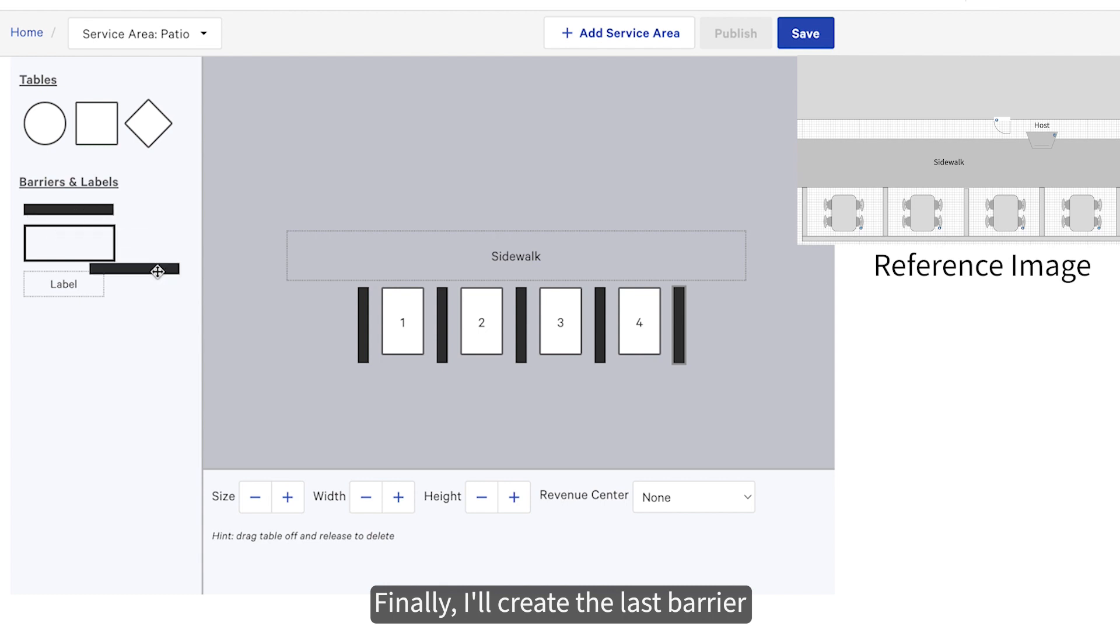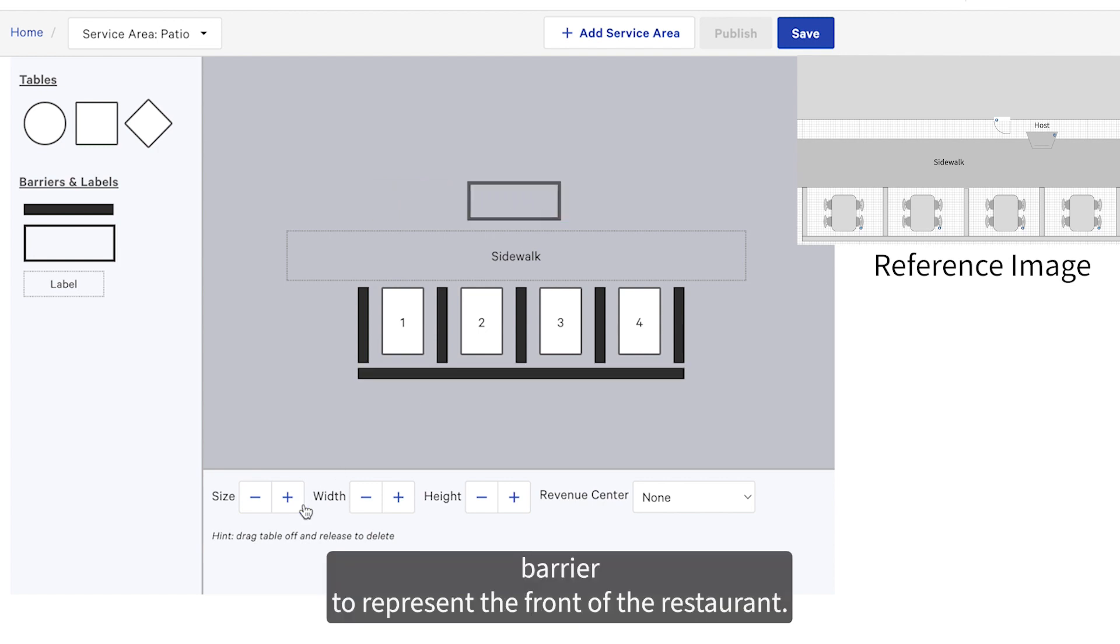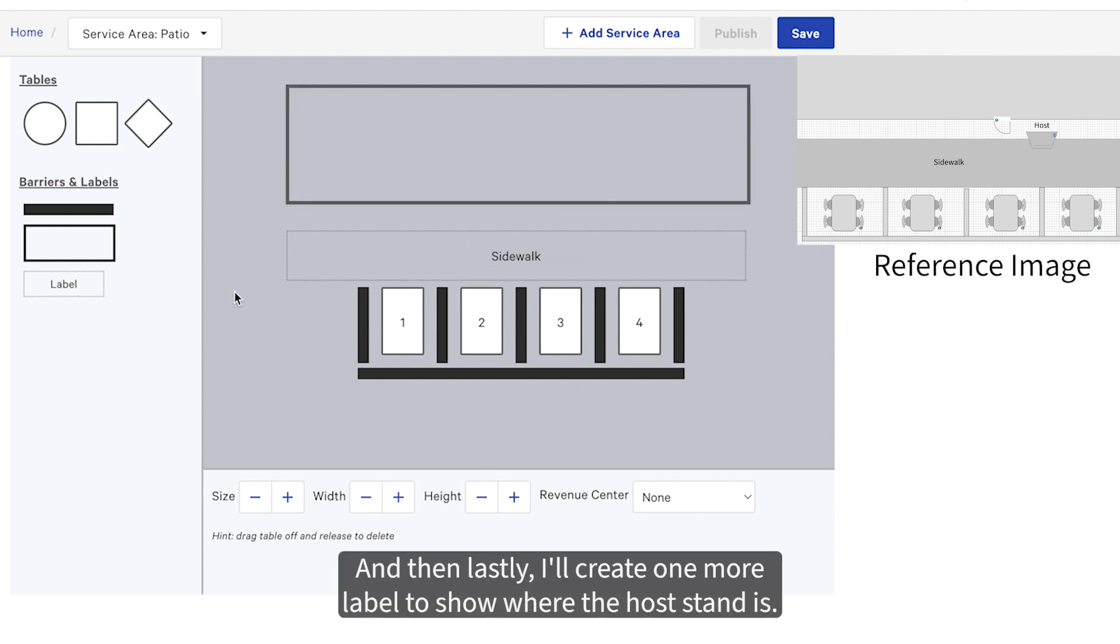I'll create the last barrier that blocks the tables from the street. I'm then going to use this outlined barrier to represent the front of the restaurant. And then lastly, I'll create one more label to show where the host stand is.